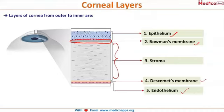The endothelium is the most important layer because it helps in the maintenance of transparency. The cornea accounts for most of the dioptric power of the eye — about 43 to 46 diopters of the human eye is provided by the cornea — so transparency is of utmost importance, and this is majorly maintained by the endothelium.